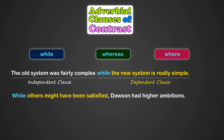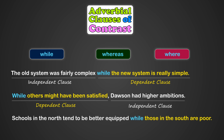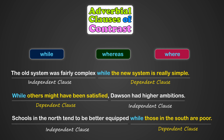'While others might have been satisfied, Dawson had higher ambitions.' Here, the dependent clause 'where others might have been satisfied' is the opposite of the independent clause 'Dawson had higher ambitions' in terms of satisfaction. Or: 'Schools in the north tend to be better equipped, while those in the south are poor.' Here, the dependent clause is the opposite of the independent clause in terms of equipment.